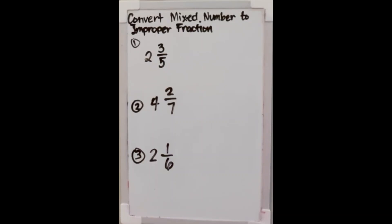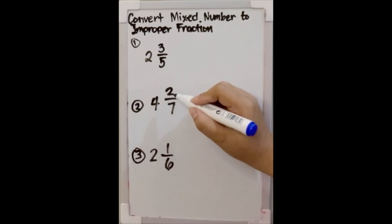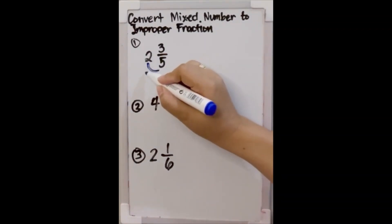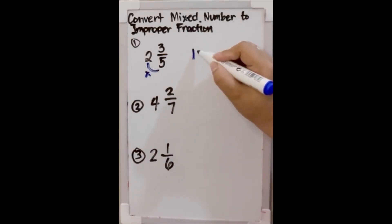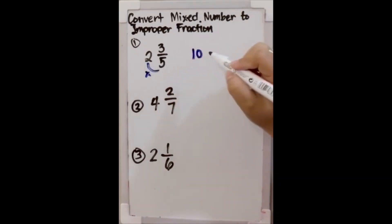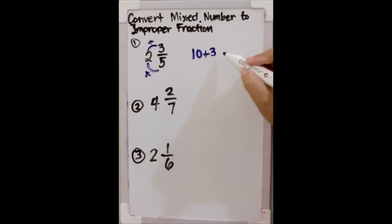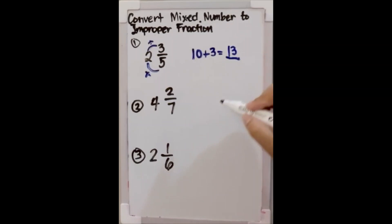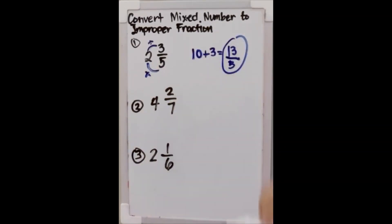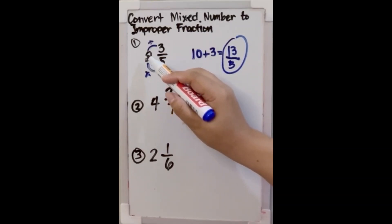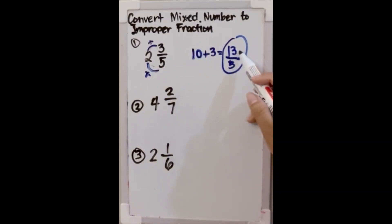Number 1, we have 2 and 3 fifths. What we're going to do first is multiply the denominator by the whole number: 5 times 2 is 10. Then we add the numerator 3, so 10 plus 3 gives us 13. The denominator stays the same, so we write 5. Therefore 2 and 3 fifths is equal to 13 over 5.